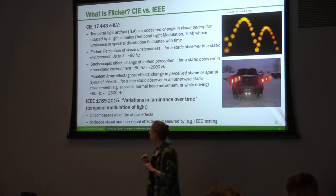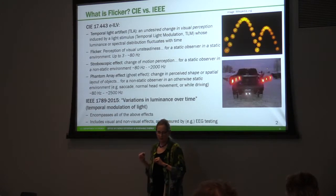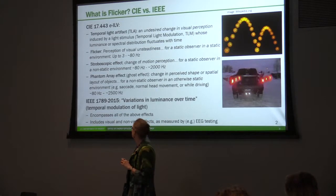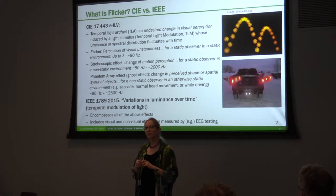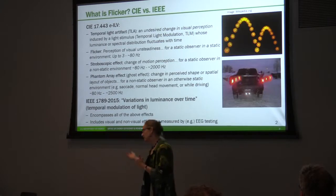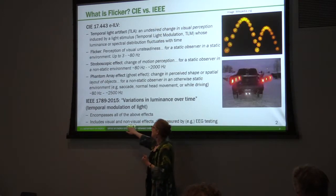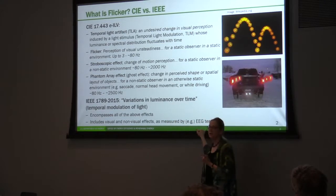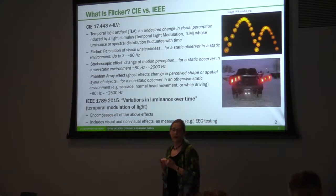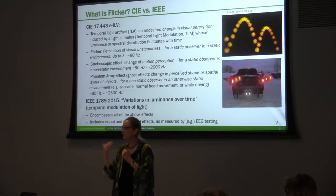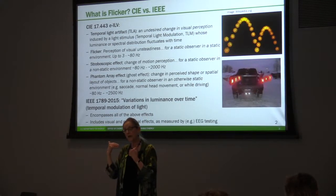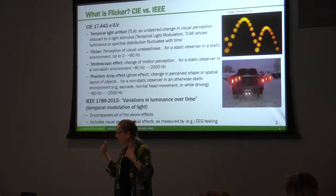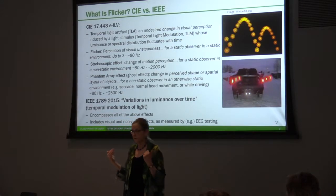The IEEE 1789 committee worked on a standard for about seven years, and they define flicker additionally as all visual and non-visual effects as measured by EEG testing. Whether you see it or not, it may be affecting your brain. Your brain may be picking up the change in light output even though you're not aware of it.